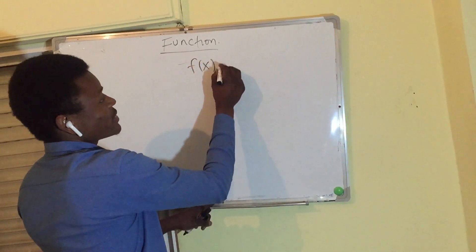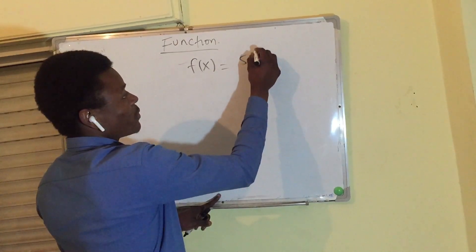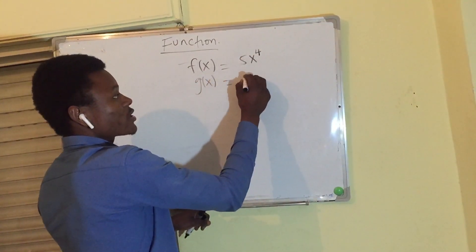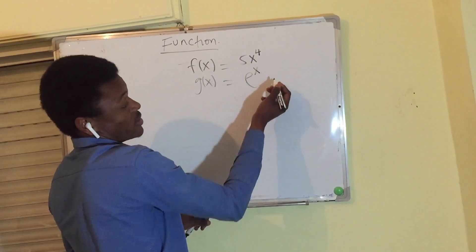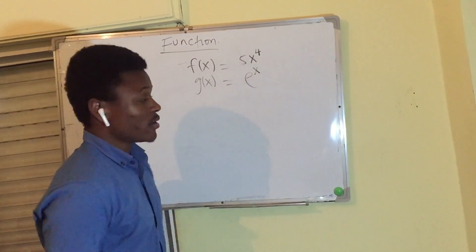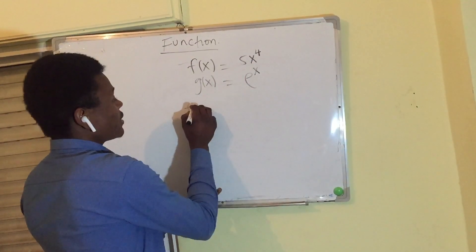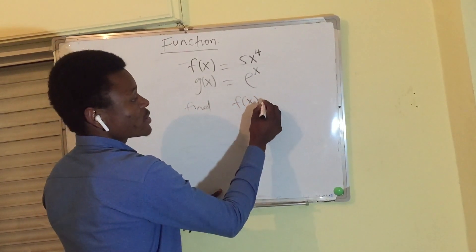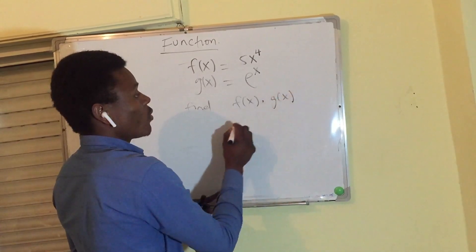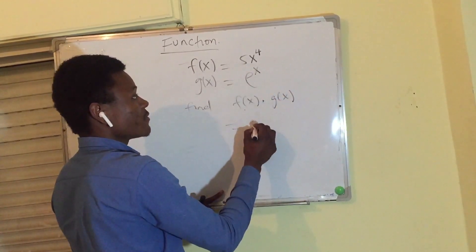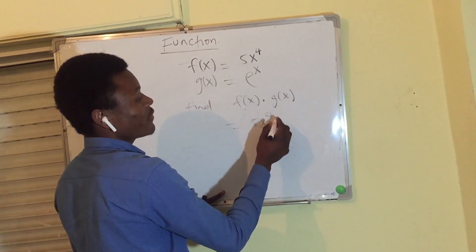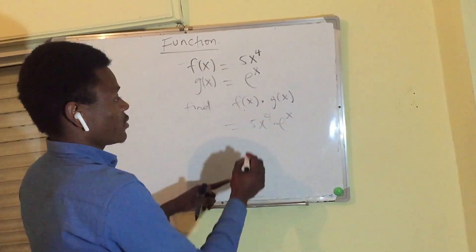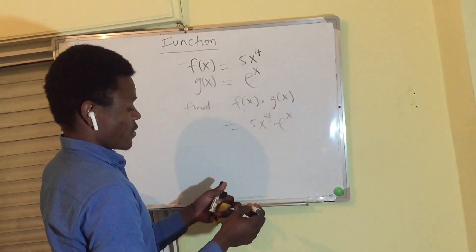For another example involving multiplication: f of x equals 5x to the power of 4, and g of x equals exponential x (e to the x). The question asks us to find f of x times g of x, which equals 5x to the power of 4 times e to the x.